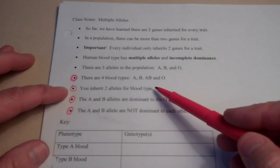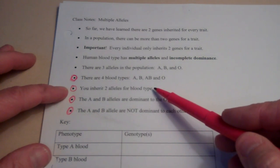You, like everybody else, inherits two alleles for your blood type, one allele from Mom, one from Dad.